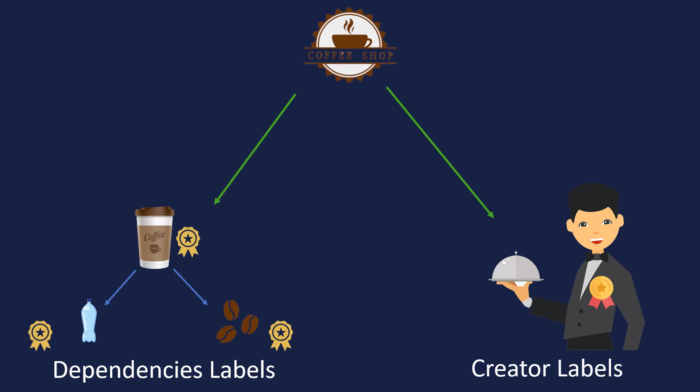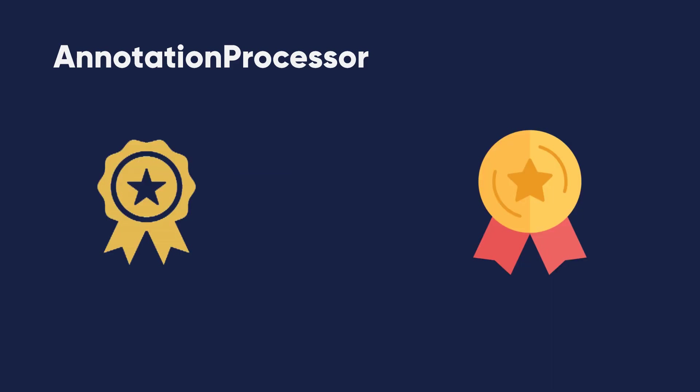The dependency labels — the coffee, beans, and water — are called dependency labels, and the water is called creator labels. I will show you this in Android Studio and we'll make an app that uses Dagger. The customer will call the getCoffeeCup method, which will call the creator, and the creator will look for dependency labels. Dagger knows how to do this using an annotation processor. These annotations will write the code automatically, telling Dagger what the dependency labels and creator labels are.